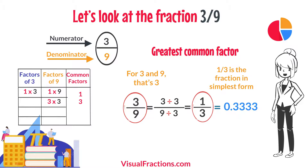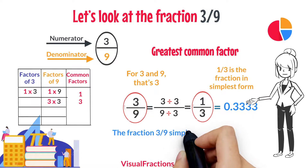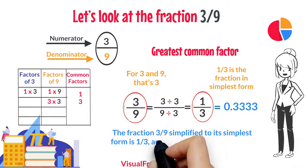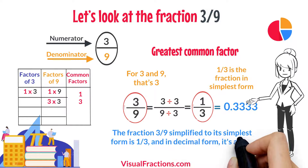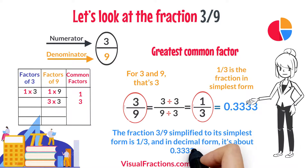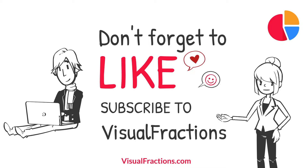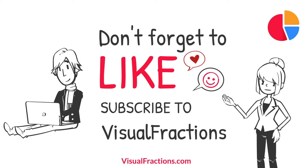So, there you have it. The fraction 3 ninths simplified to its simplest form is 1 third, and in decimal form, it's about 0.3333. If you found this tutorial helpful, go ahead and smash that like button and don't forget to subscribe to Visual Fractions.